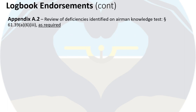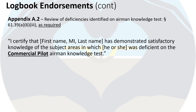Finally, we have an endorsement that is not required. If you're one of the few people who scored a 100 on your written test, this is not a required endorsement. However, in appendix A.2, your instructor must review any deficiency identified on the airman knowledge test according to FAR 61.39(A)(6)(3), and again this is only as required. Here's an example of what this endorsement would look like.